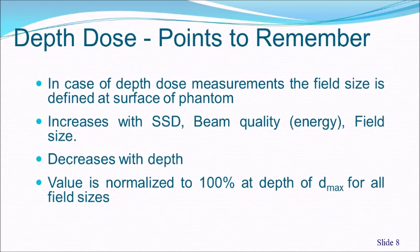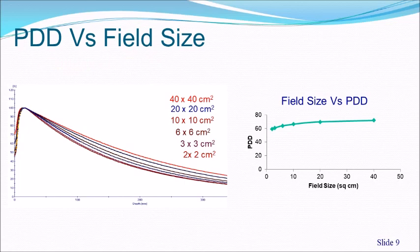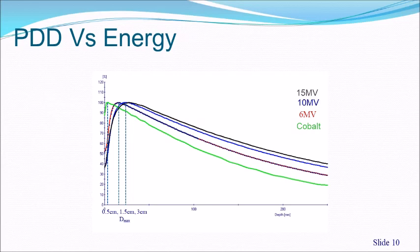Key points for depth dose: the field size is defined at the phantom surface. PDD increases with SSD, beam quality (higher energy means higher penetration), and field size, but decreases with depth. The value is normalized to 100 at D-max. PDD curves for various field sizes from 2×2 to 40×40 show that PDD increases with field size and then reaches a saturation level for very large fields.